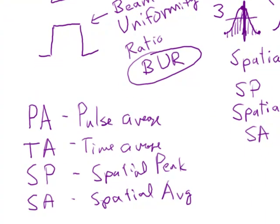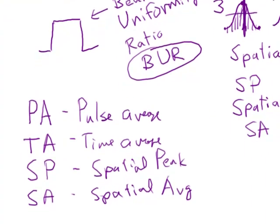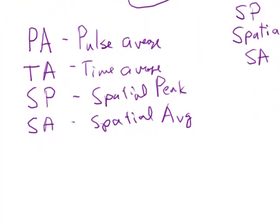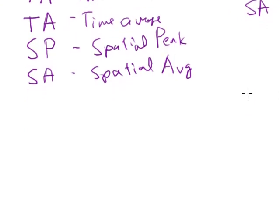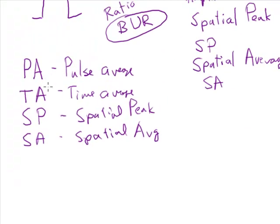All right. So let's take a look at how these are related. And you may have intensity specified in terms of usually you'll have it in terms of two of these. So you might have the spatial peak and the pulse average, or the spatial peak and the time average, or the spatial average and the pulse average, or the spatial average and the time average. So you could have any combination of those.